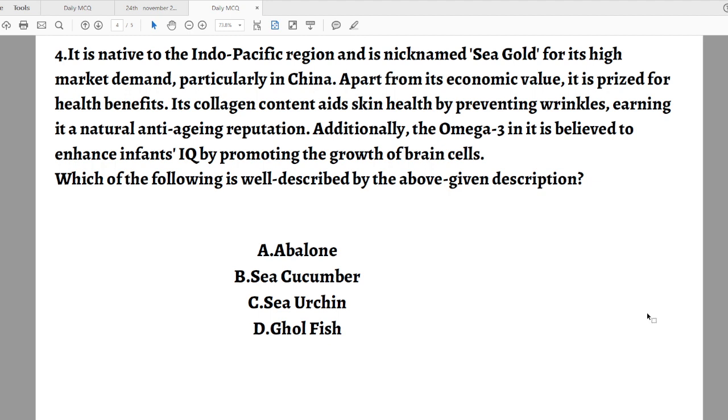Question number four: It is native to the Indo-Pacific and is nicknamed Sea Gold for its high market demand, particularly in China. Apart from its economic value, it is prized for health benefits. Its collagen content aids skin health by preventing wrinkles, earning it a natural anti-aging reputation. Additionally, the omega-3 in it is believed to enhance infants' IQ by promoting the growth of brain cells. Which of the following is well described by the above description? Options are: A - abalone, B - sea cucumber, C - sea urchin, D - goldfish.